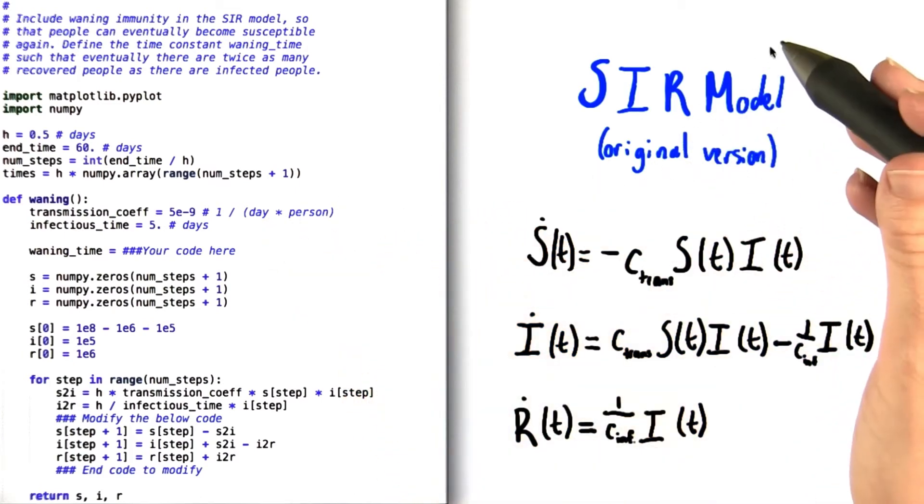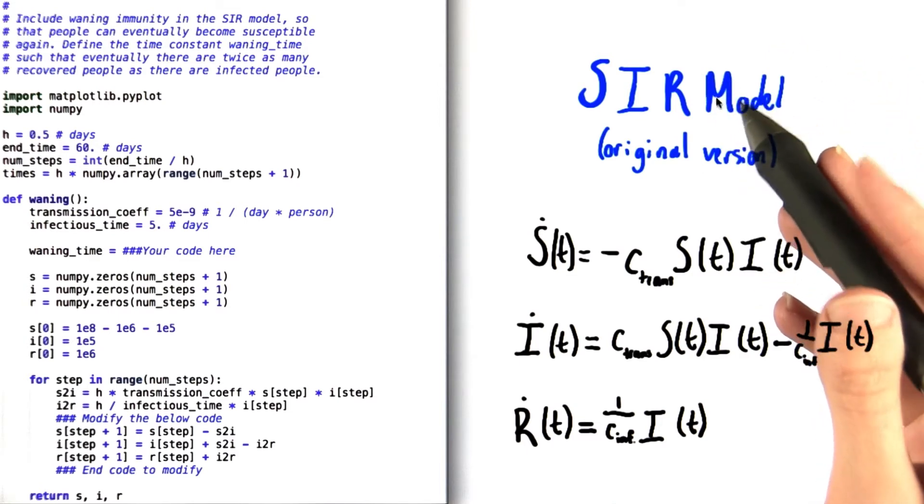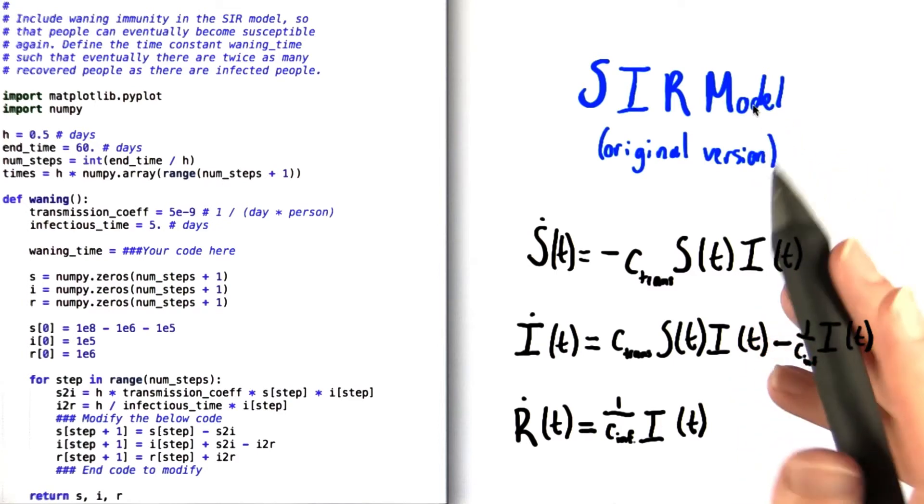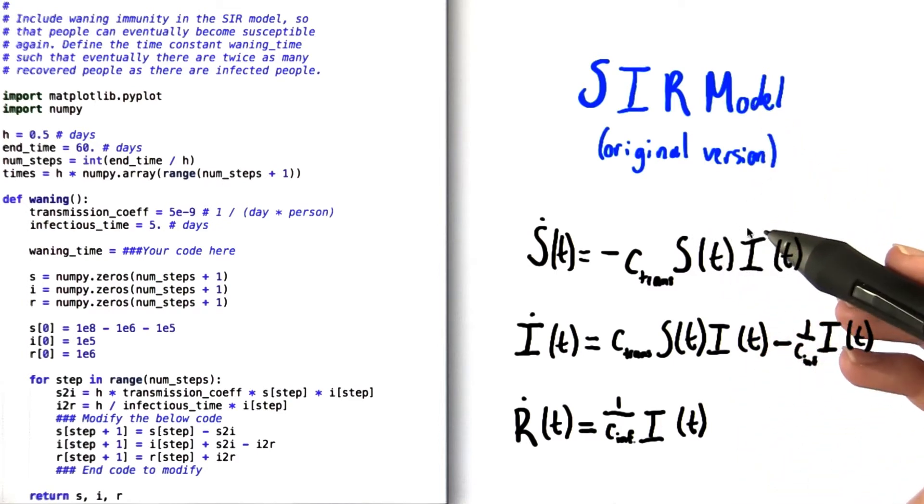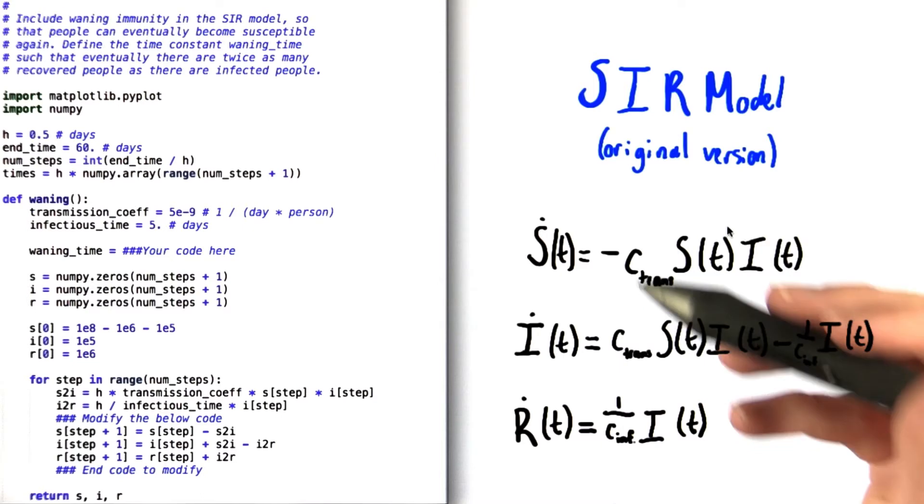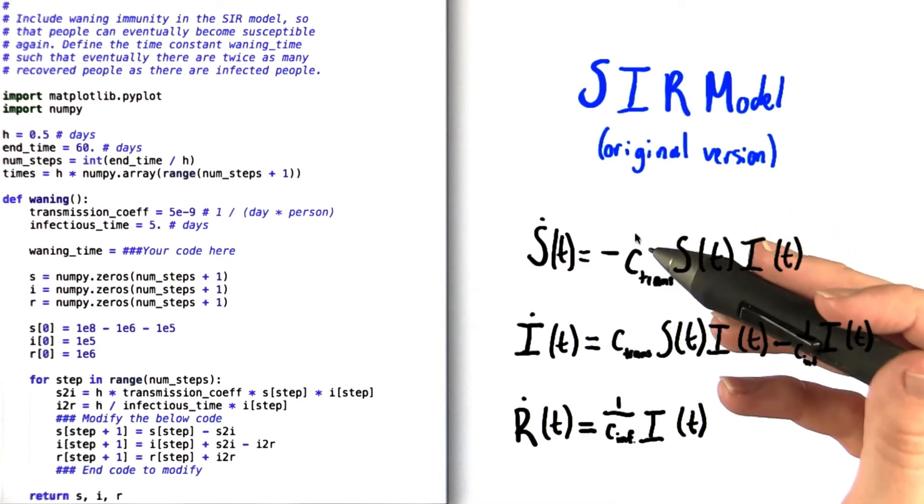Just for reference, I've included the equations for the standard SIR model right here. Remember that these equations don't include waning immunity, so first think about how you would need to change them in order to reflect the situation at hand. Once you've figured that out, you'll need to translate your mathematical expressions into code.